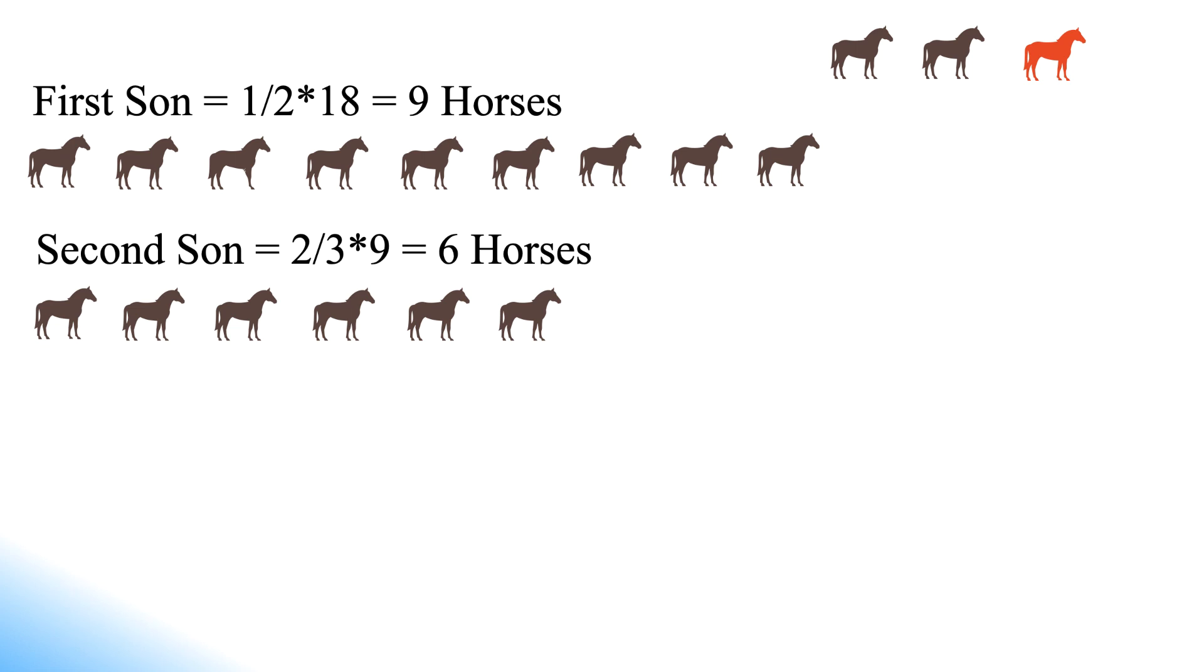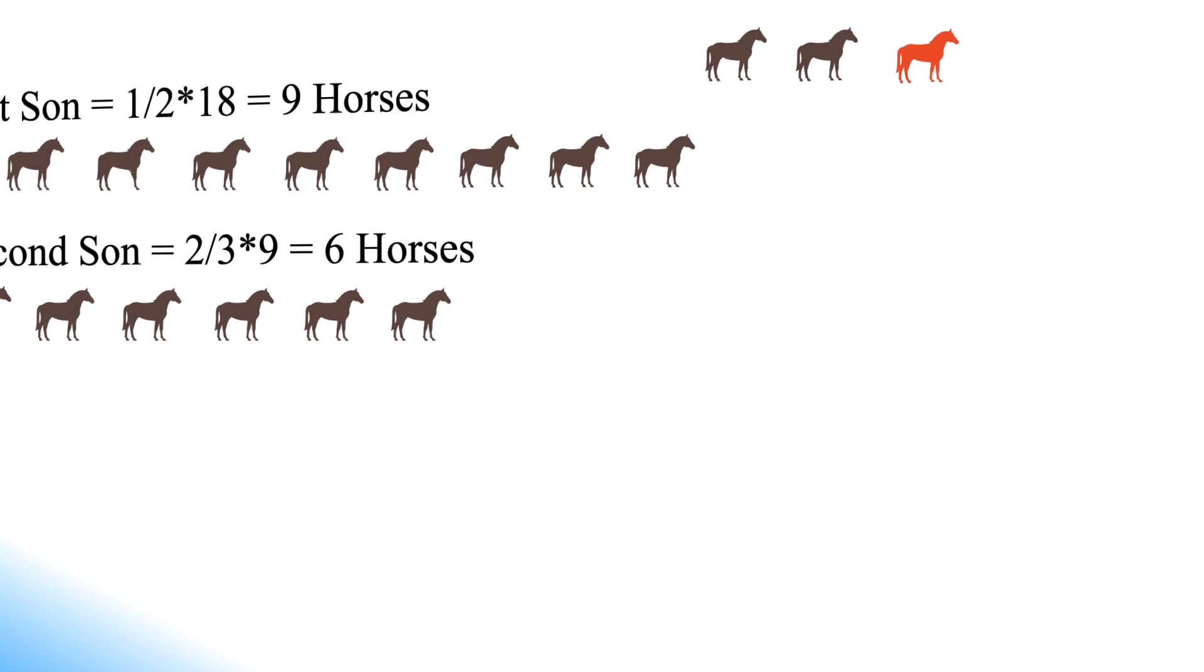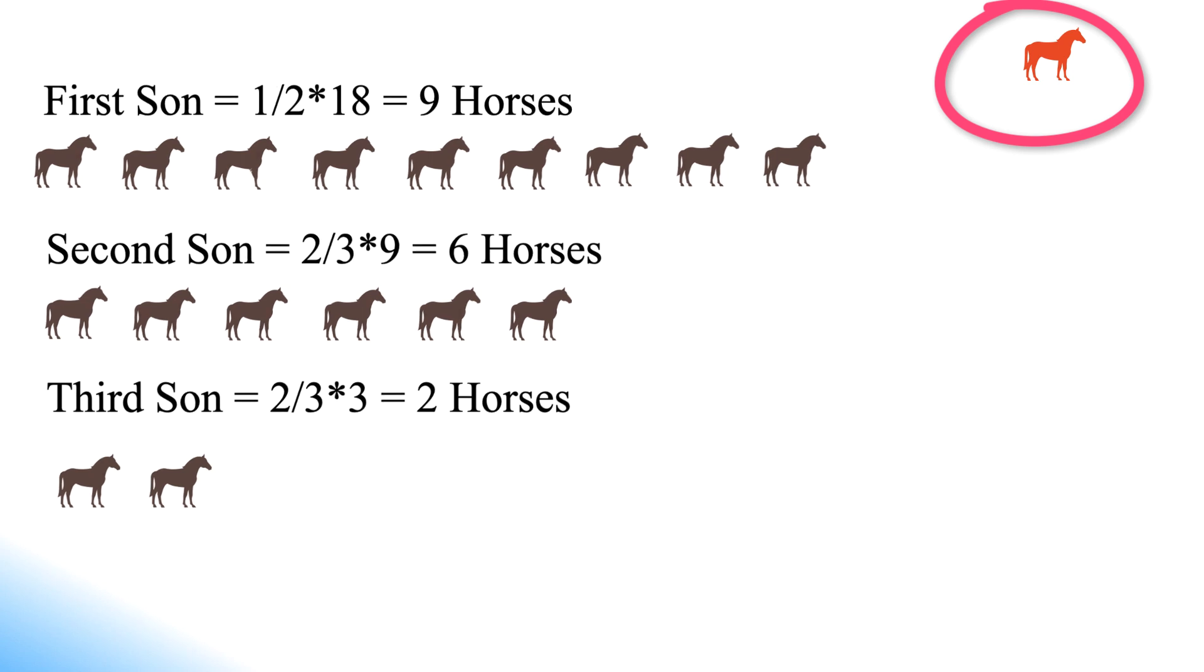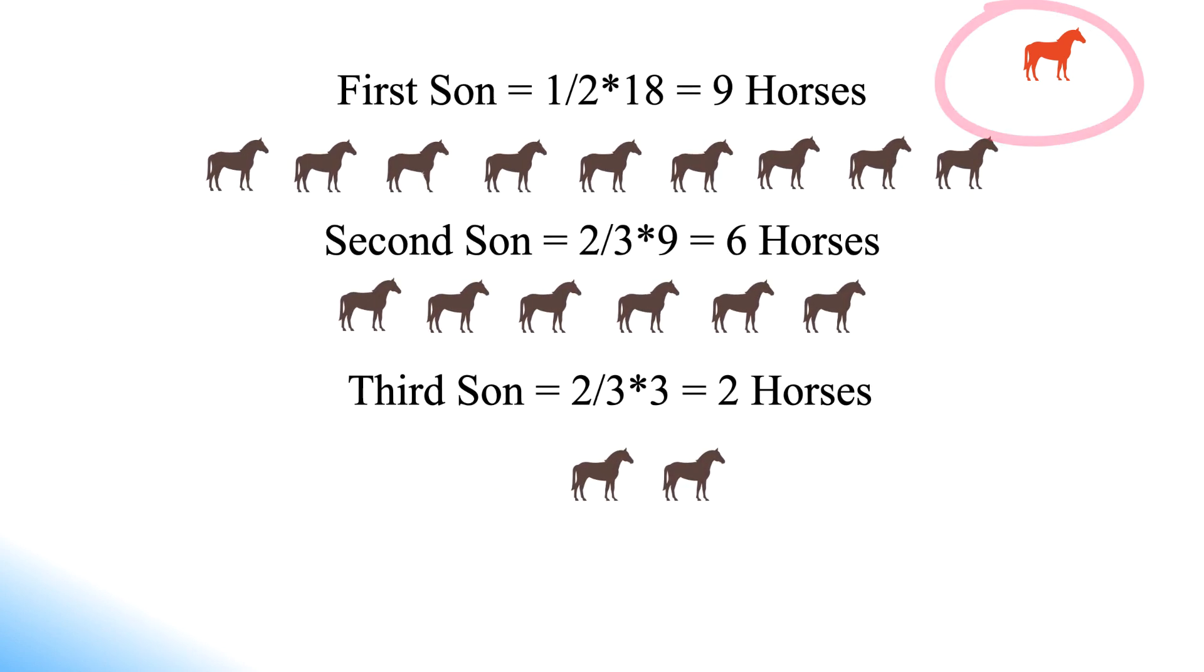Now the third son gets two-thirds of the remaining horses, so he gets 2/3 multiplied with 3, which is equal to 2 horses. Finally, total horses remaining is 18 minus 9 minus 6 minus 2, which is equal to 1 horse. The remaining horse is your imaginary horse. You can just ignore it.